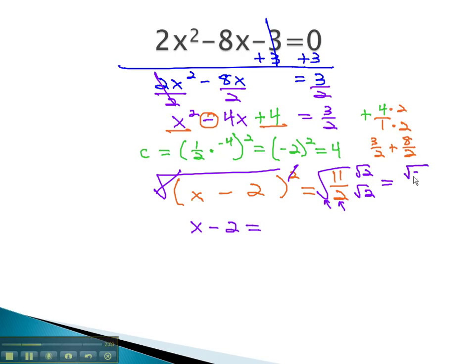We'll need to rationalize this denominator by multiplying by root 2 on top and bottom. This gives us the square root of 22 over 2. Don't forget the plus or minus, square root 22 over 2.